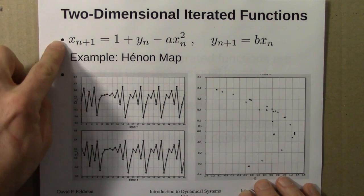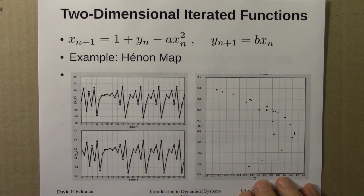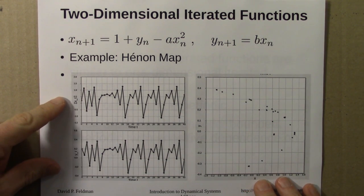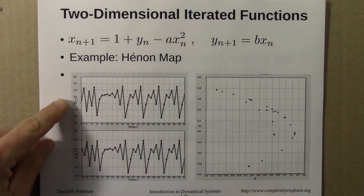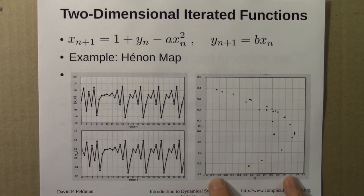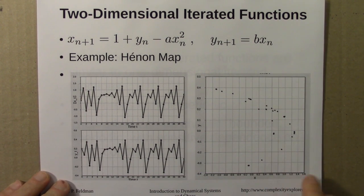The story for 2D iterated functions is pretty similar to that of 1D. There can be fixed points, there can be cyclic behavior, and there can be aperiodic behavior, there can be chaos. What's new is that we can plot these x and y points on a 2D grid like I've done here. That's another way to see the sorts of patterns that the orbits are creating, and we'll spend a bunch of time on that in the next unit.